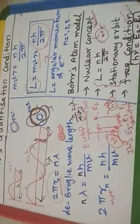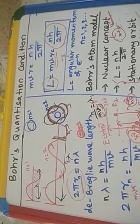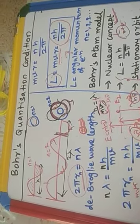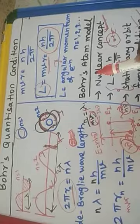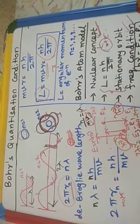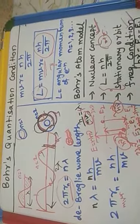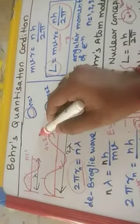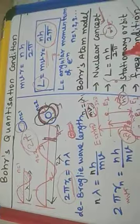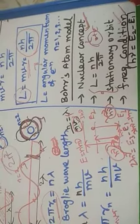This concept — Bohr's quantization condition and Bohr's atom model — is very important. Please read the book pages carefully. Electrons are distributed in orbits following the 2n² formula: two electrons in the first orbit, eight in the second, 18 in the third. This is because the orbital angular momentum must equal nh/2π — electron momentum and orbital momentum must be equal.